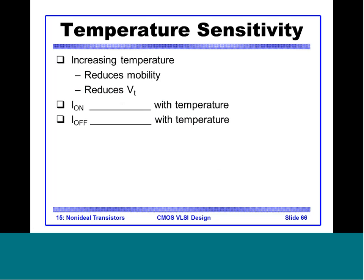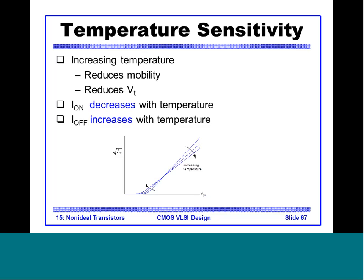Finally, a note on temperature sensitivity. Increasing temperature reduces the mobility of electrons and holes, and also reduces VT. Reduced mobility means lower I_on. The mobility reduction effect is more dominant than the VT reduction, so overall I_on decreases with increasing temperature. However, I_off — the leakage current — increases with temperature because leakage depends on VT: the lower the VT, the higher the leakage current.